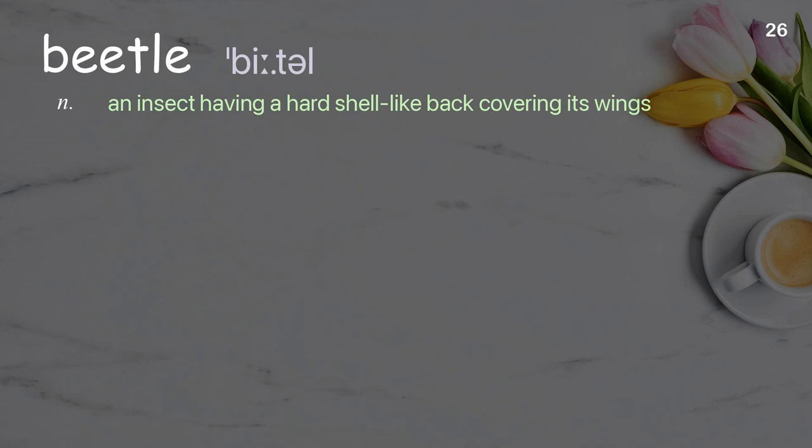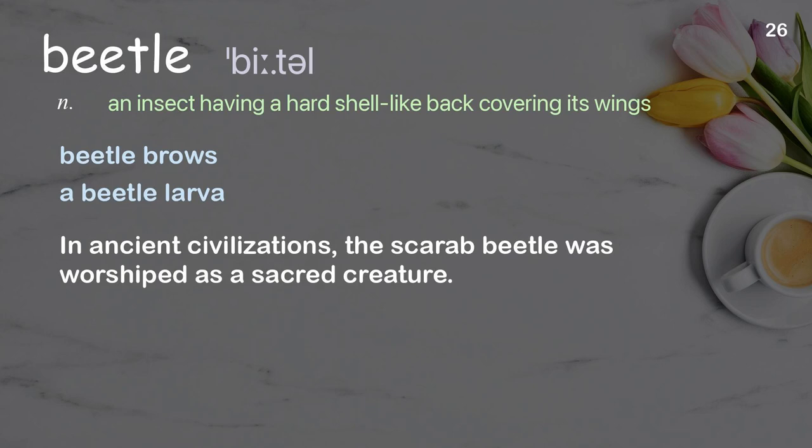Beetle: An insect having a hard shell-like back covering its wings. Examples: Beetle brows, a beetle larva. In ancient civilizations, the scarab beetle was worshipped as a sacred creature.